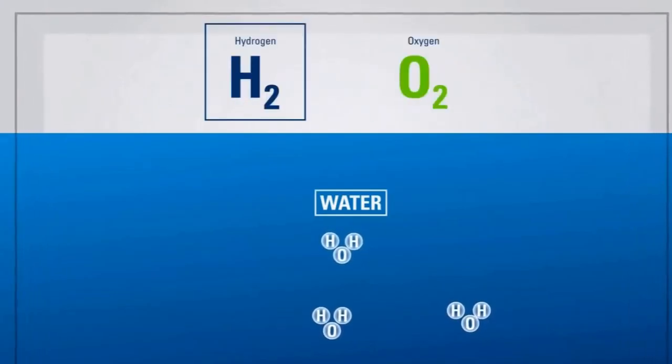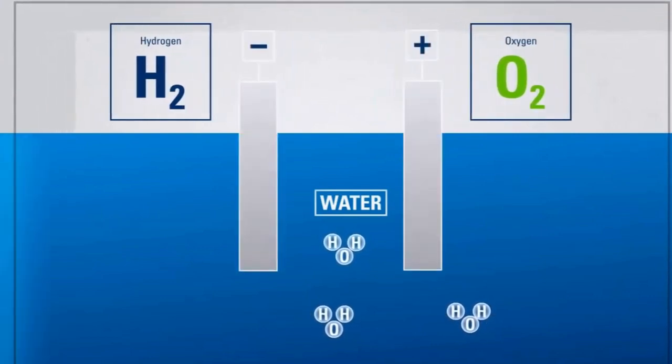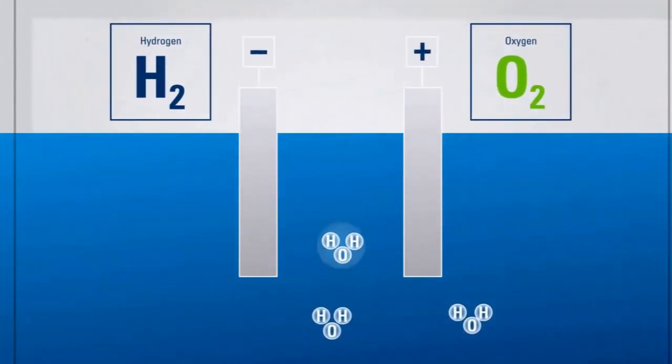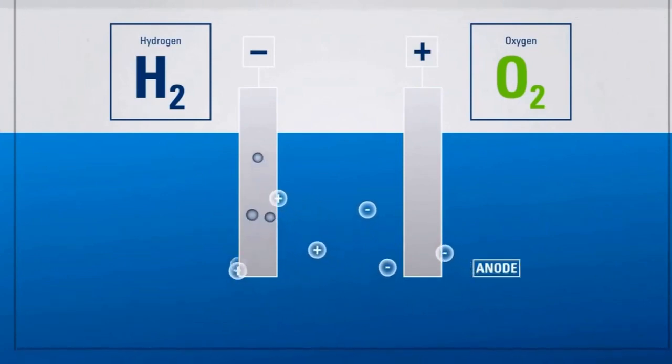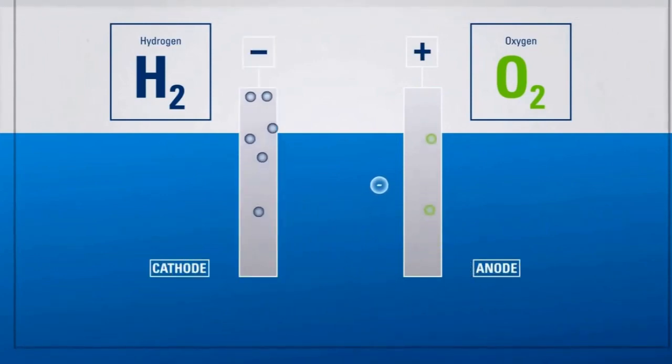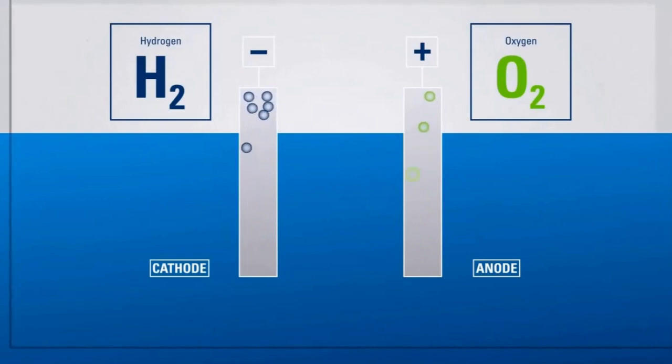Electrolysis is a common method for hydrogen production, but the process can be energy-intensive and costly. Machine learning algorithms can be used to optimize electrolysis parameters, such as temperature, pressure, and electrode configuration, to minimize energy consumption and maximize hydrogen yield.